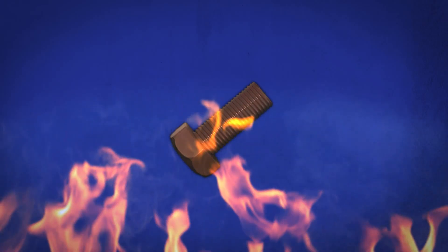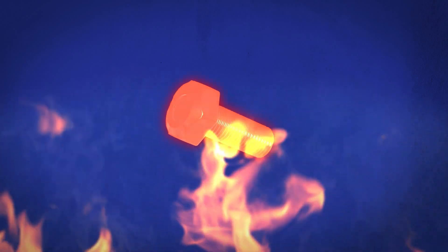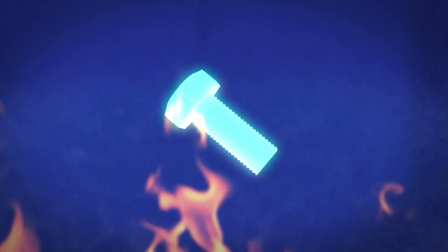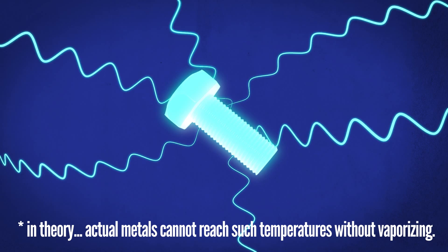When metal's been put into a fire, it starts to glow, first red hot, then white, and at its hottest, even blue, as it releases thermal energy as electromagnetic radiation. That's pretty metal.